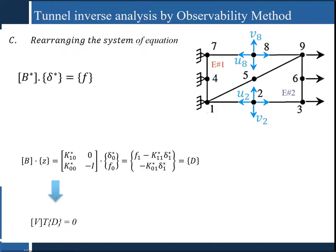In the third step, we have to rearrange the system of equations. The main system can be rearranged in an equivalent form so that unknown variables appear on the left-hand side and known variables on the right-hand side, where 0 and I are the null and identity matrices. In general, this system doesn't need to be compatible. Matrix D must satisfy some condition for the system to have a solution. To check this, it is sufficient to calculate the null space of matrix B and check if V-transpose times D equals 0. If it holds, the system is compatible; otherwise, it has no solution.